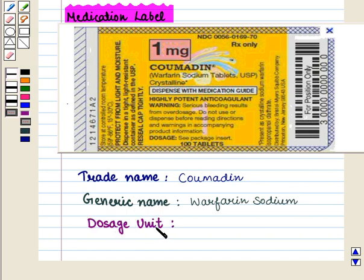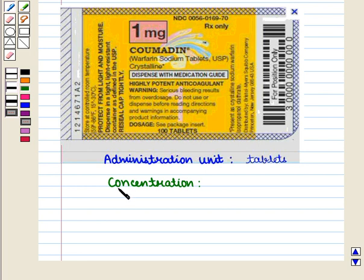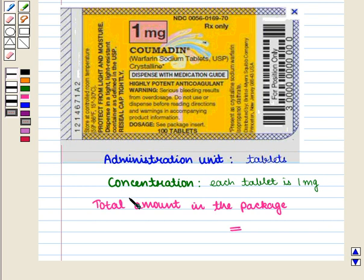The dosage unit measures the drug's weight — here the dosage unit is milligrams. The administration unit measures the drug for actual administration — here it is tablets. Concentration tells us the relationship between dosage and administration units — here each tablet is 1 milligram. The total amount in the package is 100 tablets.